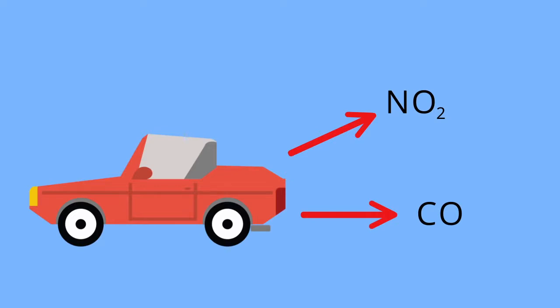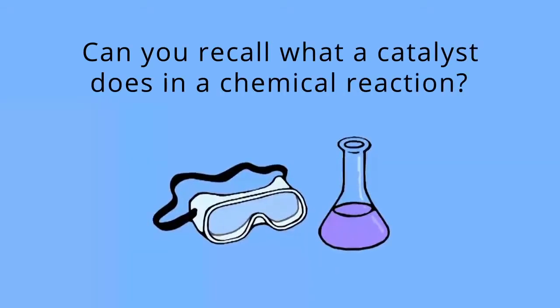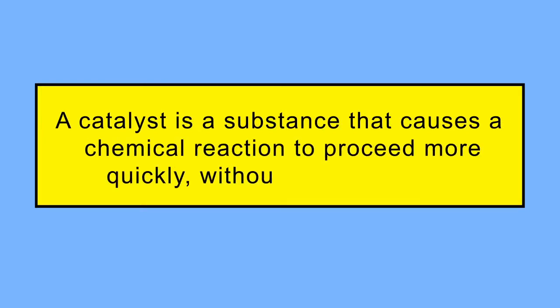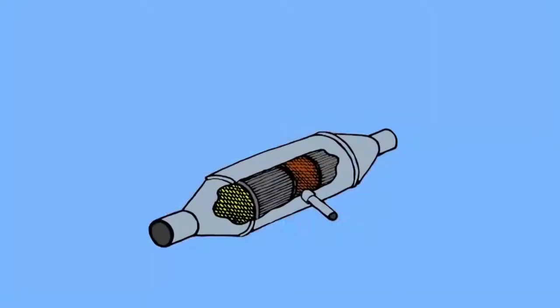Can you recall what a catalyst does in a chemical reaction? A catalyst is a substance that causes a chemical reaction to proceed more quickly without being used up. In a catalytic converter, there are two types of catalyst at work.